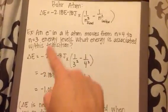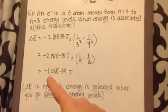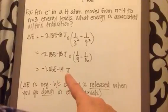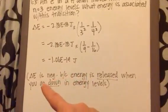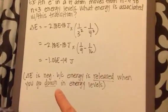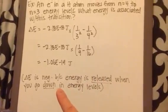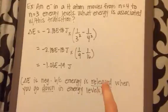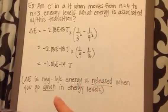Now again, the negative is built into the equation. So my final answer is negative 1.06 times 10 to the negative 19th joules. My energy is negative because I release energy when I go down in energy levels. If I was going up in energy levels, this would be positive and I would be absorbing energy.